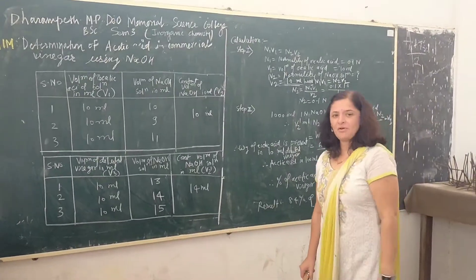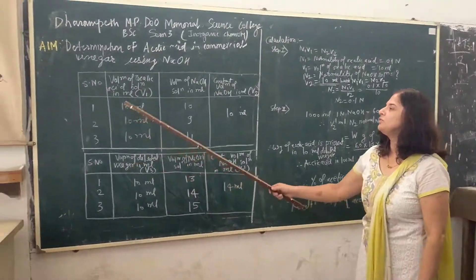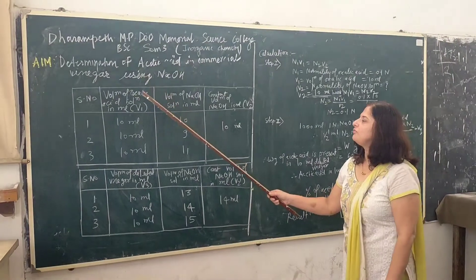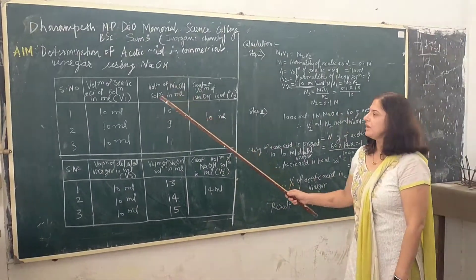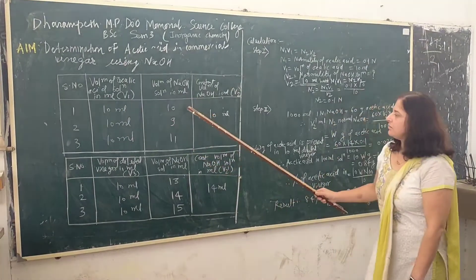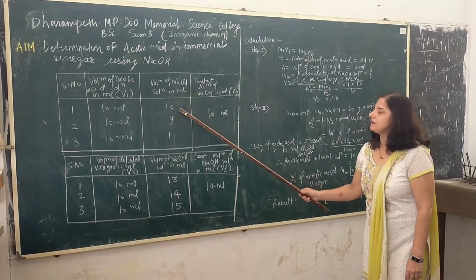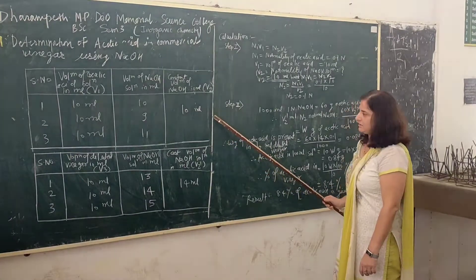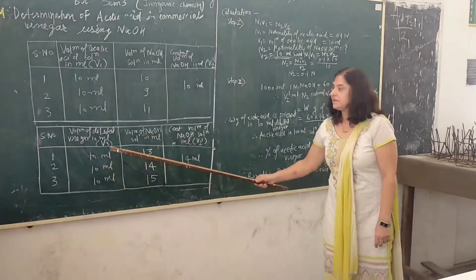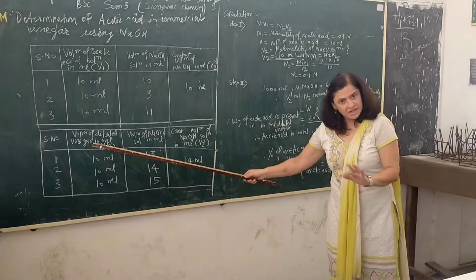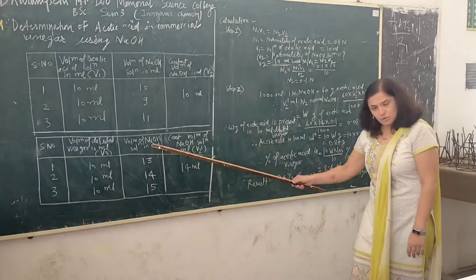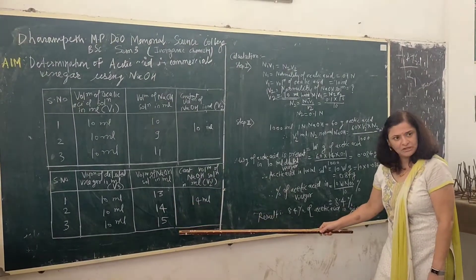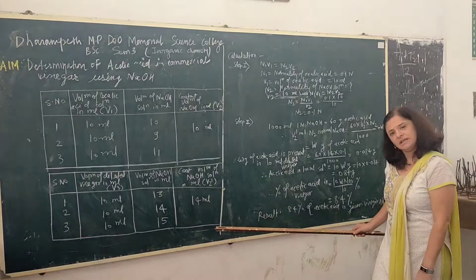After the practical performance and titrations, we move towards the observation and calculation part. From step 2 (titration of oxalic acid versus NaOH), the burette readings obtained are 10 ml, 9 ml, and 11 ml — so the constant volume is 10 ml. From step 3 (titration of standardized NaOH versus unknown vinegar, i.e., acetic acid), the burette readings are 13 ml, 14 ml, and 15 ml — and the constant reading is 14 ml.